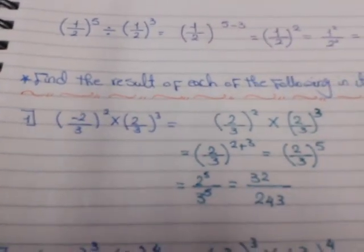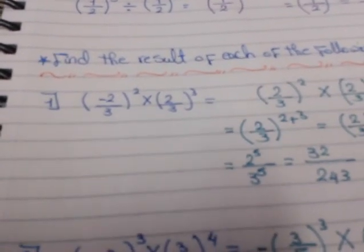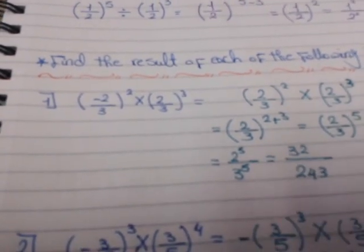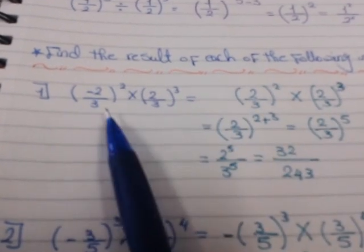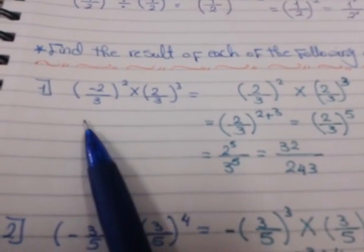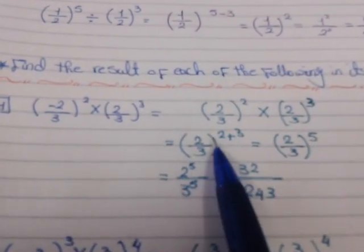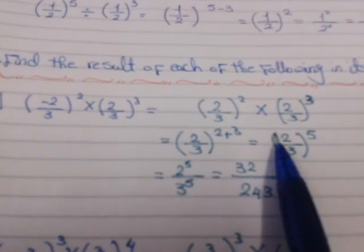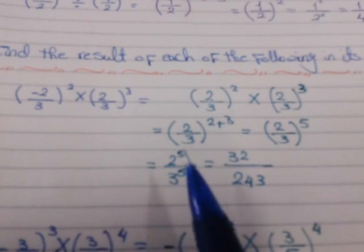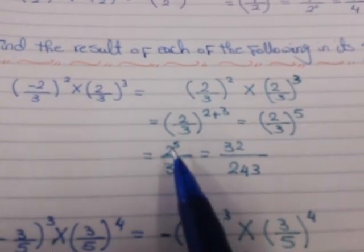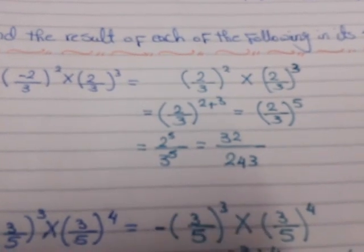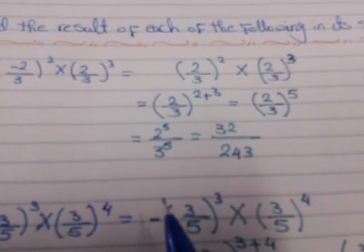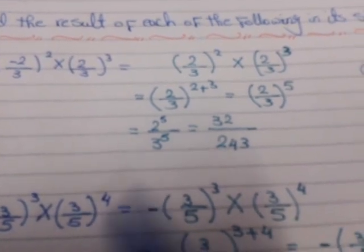Find the result of each of the following in its simplest form. First question: (−2/3)² times (2/3)³. Here we have an even power, so the even power makes the negative positive. We get (2/3)² times (2/3)³. Same base — add the powers: 2 plus 3 equals 5, giving (2/3)⁵. Distribute the power 5: 2⁵ over 3⁵ equals 32 over 243.